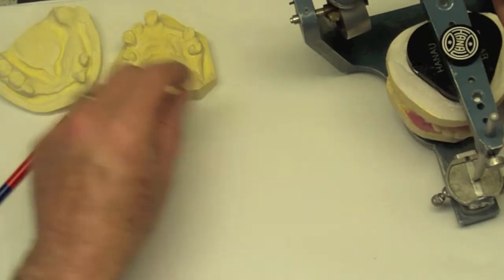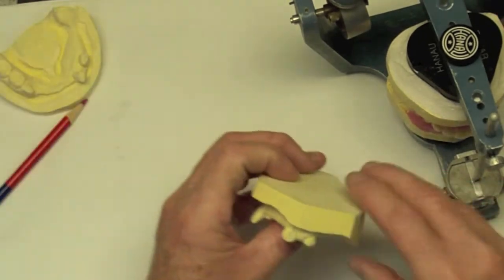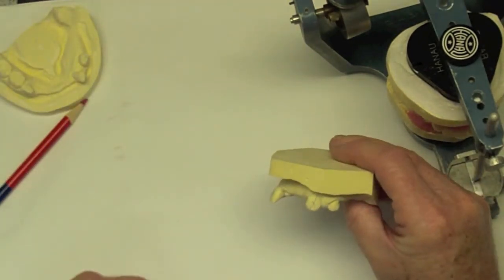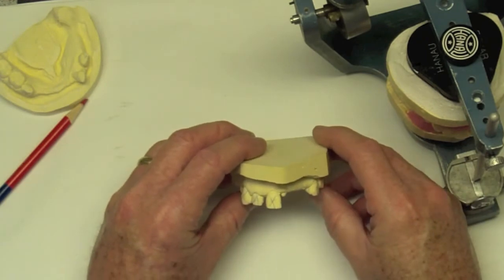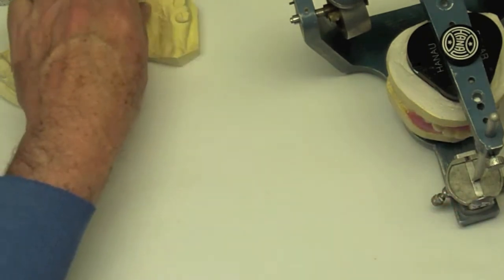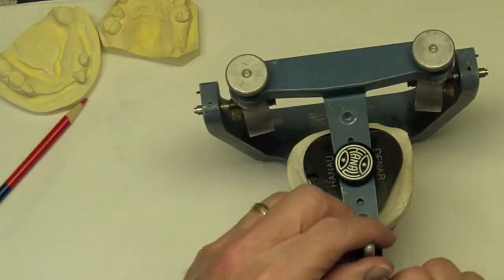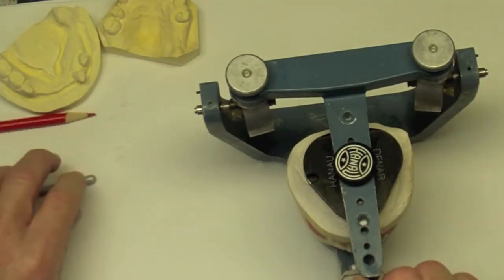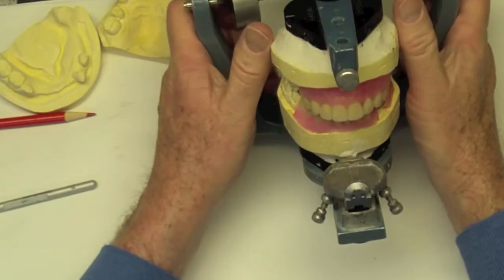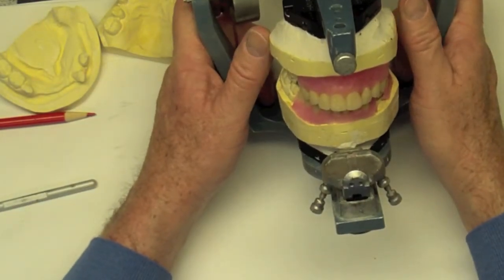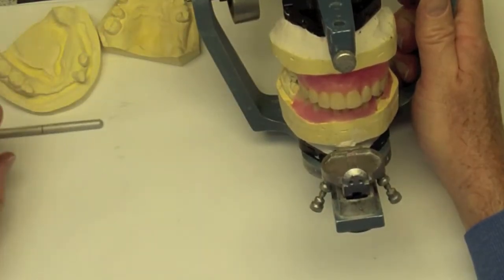To get kind of an idea of where we're going, here you see in profile and from an anterior view, the teeth that we have. And here's what we have proposed for the, I'm going to go ahead and take the pen out so it's a little easier to see, what we have proposed for the interim removable partial denture.